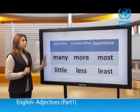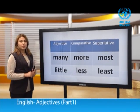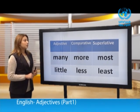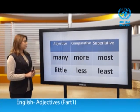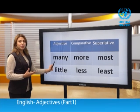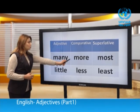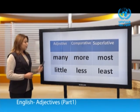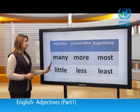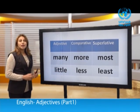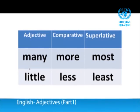Let's look at this table together. Adjective, comparative, and superlative. 'Many' is an adjective describing number or quantity — we have 'more' and 'most.' Then we have 'little,' 'less,' and 'least.'